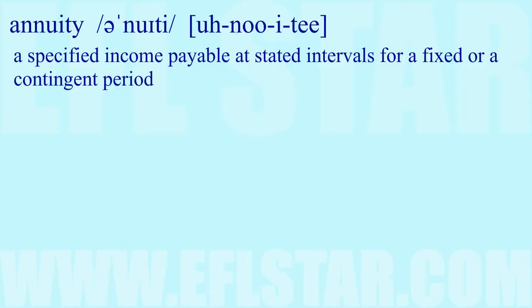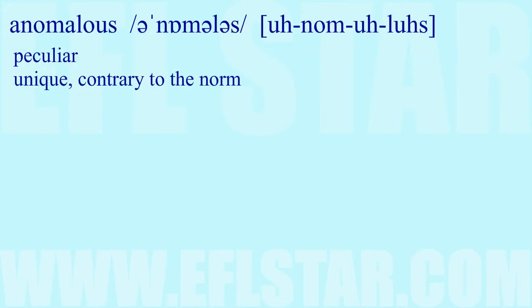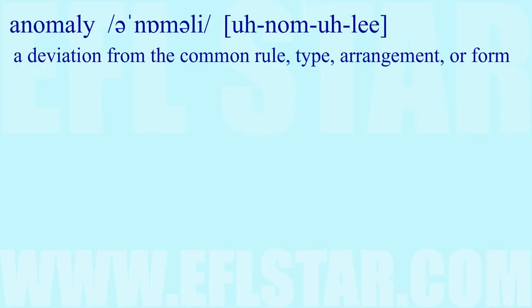Annotate: to supply with critical or explanatory notes; to comment upon in notes. Annuity: a specified income payable at stated intervals for a fixed or contingent period. Anomalous: peculiar, unique, contrary to the norm.